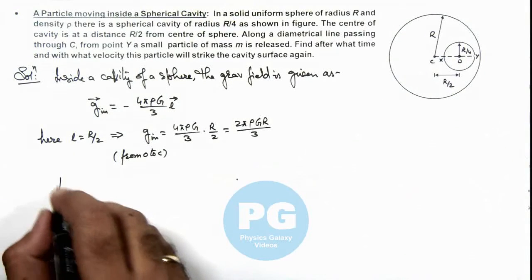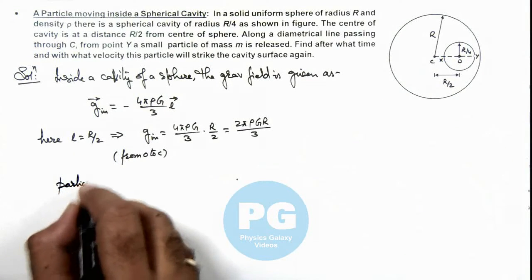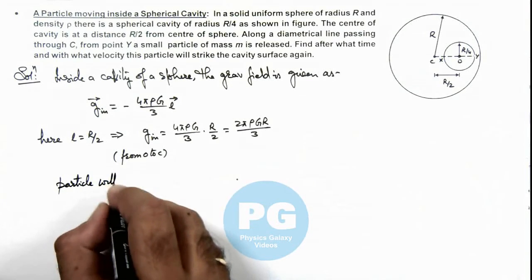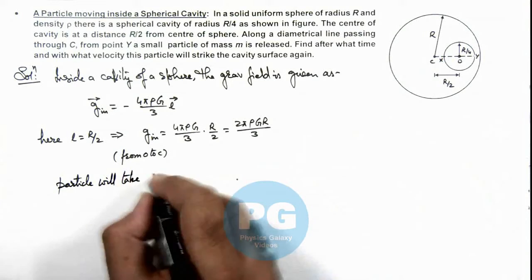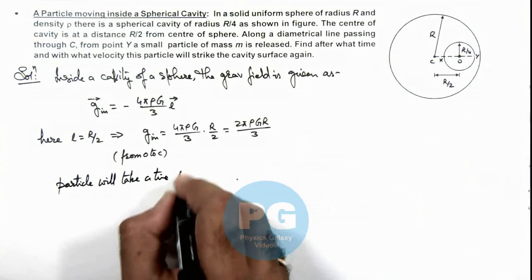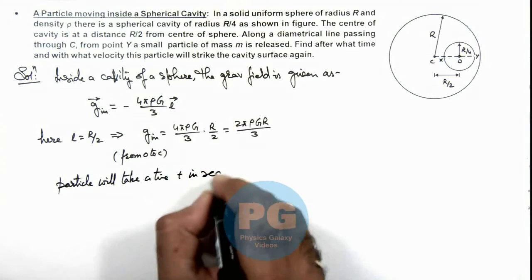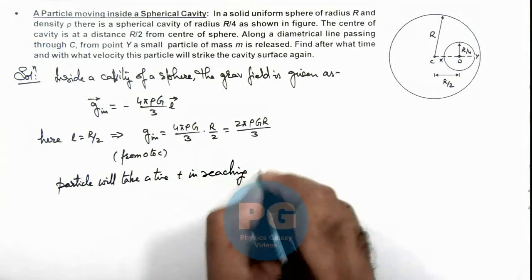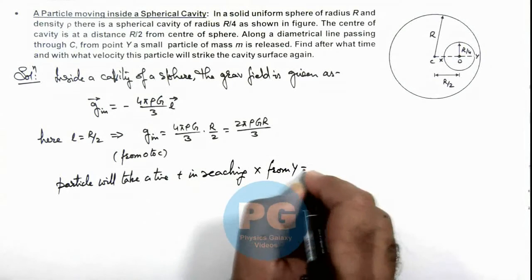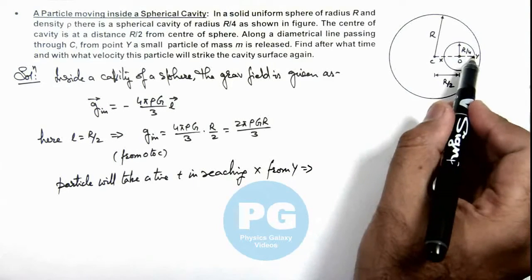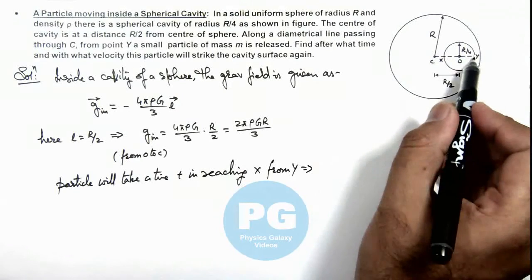So here we can directly write: particle will take a time t in reaching x from y. This implies we can write the total distance it will travel will be R/2.